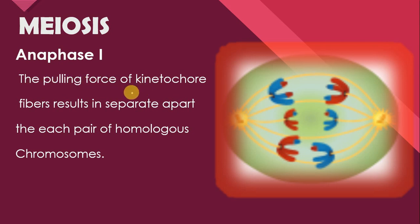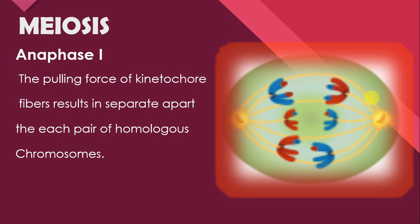Anaphase 1: the pulling force of kinetochore fibers results in separating each pair of homologous chromosomes. As a result of the shrinkage of these kinetochore fibers, a pulling force is exerted and homologous chromosomes ek doosre se separate hokar opposite poles ki taraf move kar jate hain. Again, meiosis ke anaphase mein chromosomes opposite poles ki taraf move karte hain, jabke mitosis mein chromatids opposite poles ki taraf move karte hain.